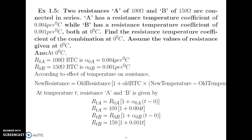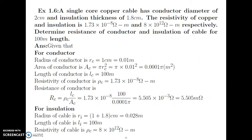Now let us go to the next example based on a cable. A single core copper cable has a conductor diameter of 2 cm and insulation thickness of 1.8 cm. The resistivity of copper and insulation is 1.73 into 10 raised to minus 8 ohm meter and 8 into 10 raised to 12 ohm meter respectively. Determine the resistance of conductor and insulation of the cable for 100 meter length.